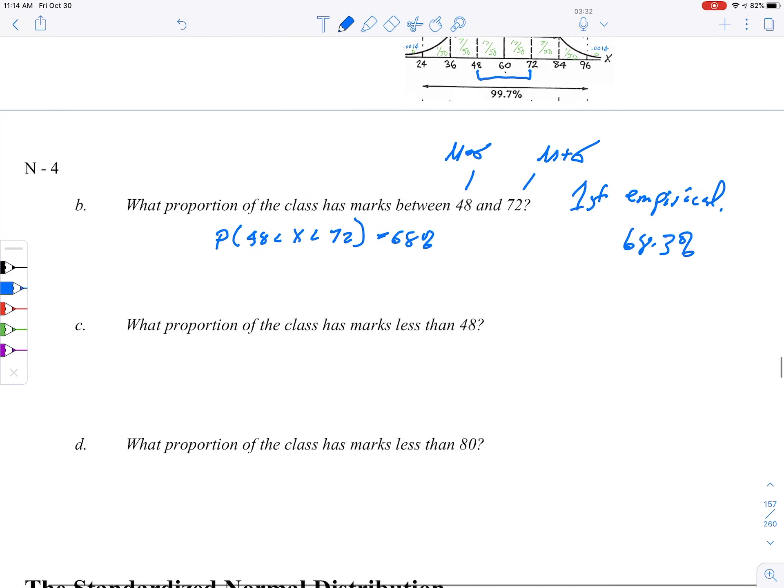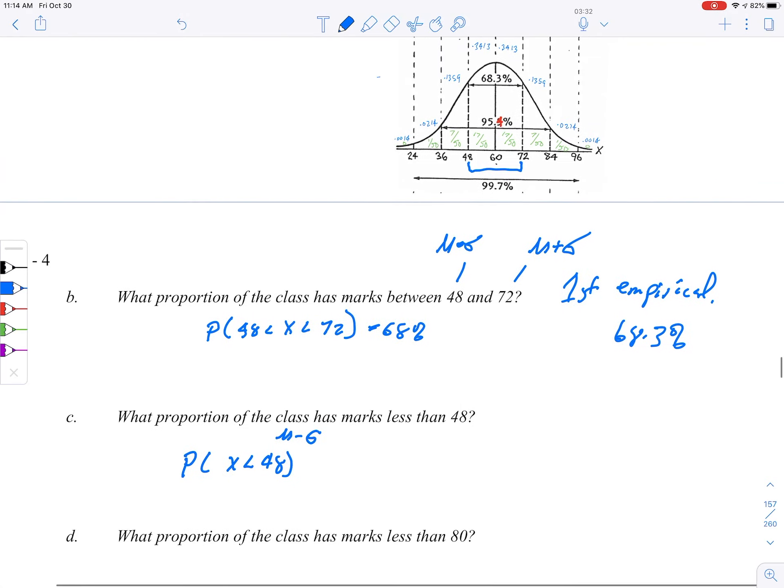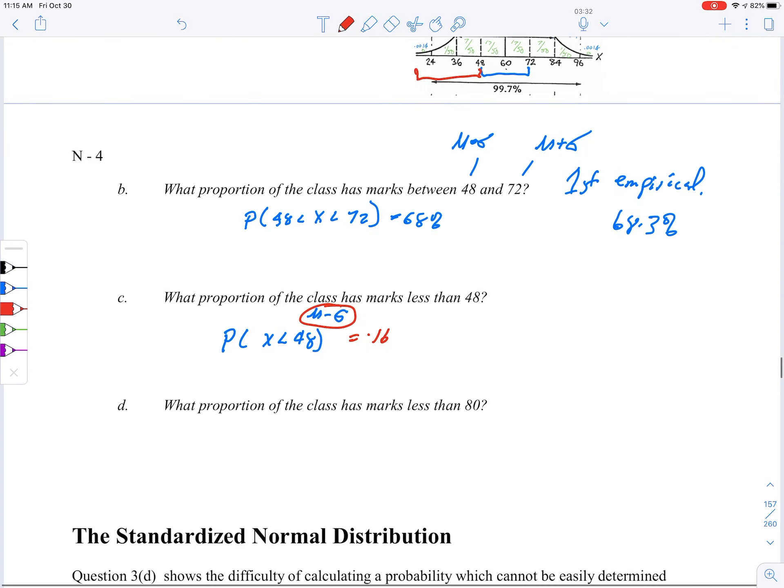Second thing here is what proportion of the class has marks less than 48? So this would be, what's the probability that X is less than 48? Now, this is μ minus one standard deviation. What we're looking at is from 48 down. If we were to add up those numbers, that would come to about 16% right there. That's 7 plus 1 is 8 over 50, and that's 16%. So it's easy to calculate these probabilities when they fall on those dividing lines of 1, 2, 3 standard deviations on either side of the mean. But what do you do with this guy down here?